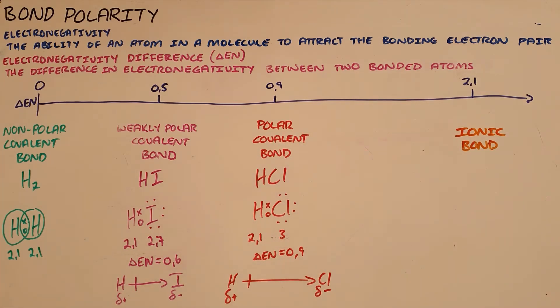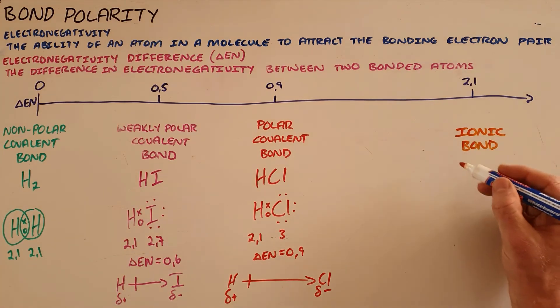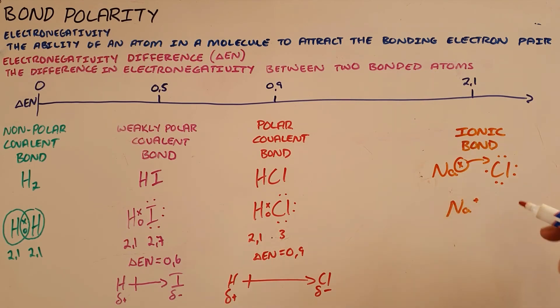Finally, we know that if the electronegativity difference is great enough, sodium, which has a single valence electron, would lose that electron to chlorine, which is looking for a valence electron, and that transfer of electrons creates a positively charged sodium ion and a negatively charged chlorine ion. We can see that the electronegativity difference between these two is far greater. The electronegativity difference here is 2.1, which tells us that it is no longer a covalent bond—the electron is not being shared, the electron has been transferred, and as a result we form an ionic bond.